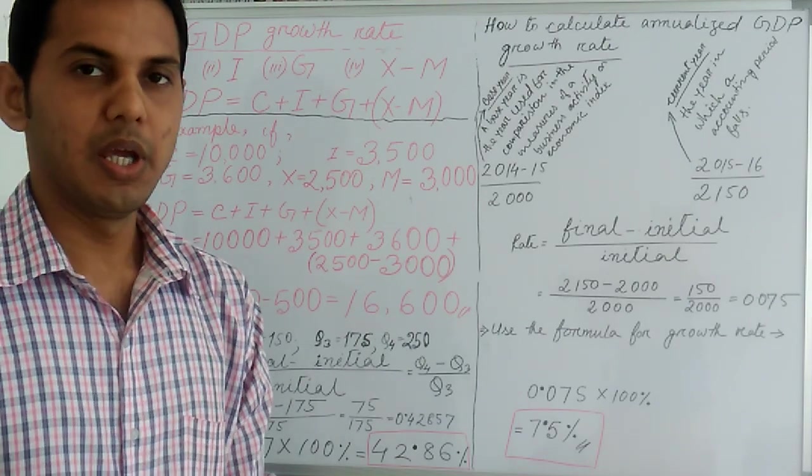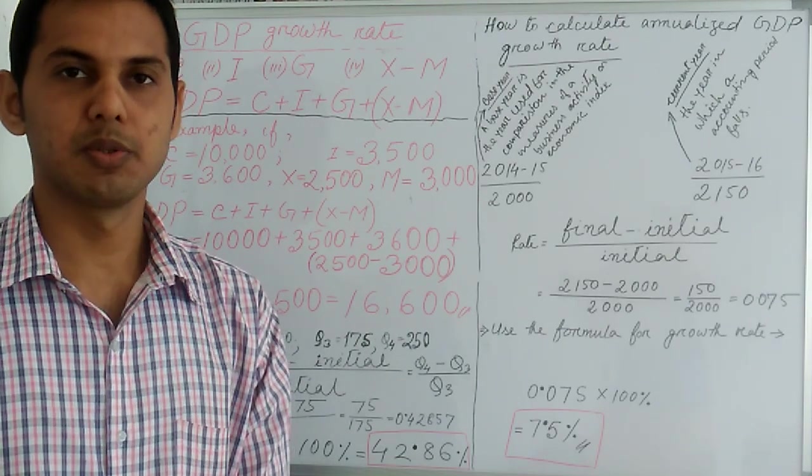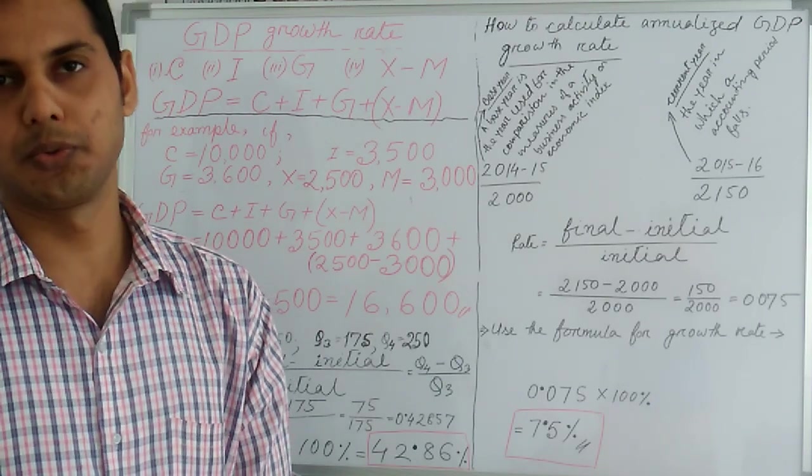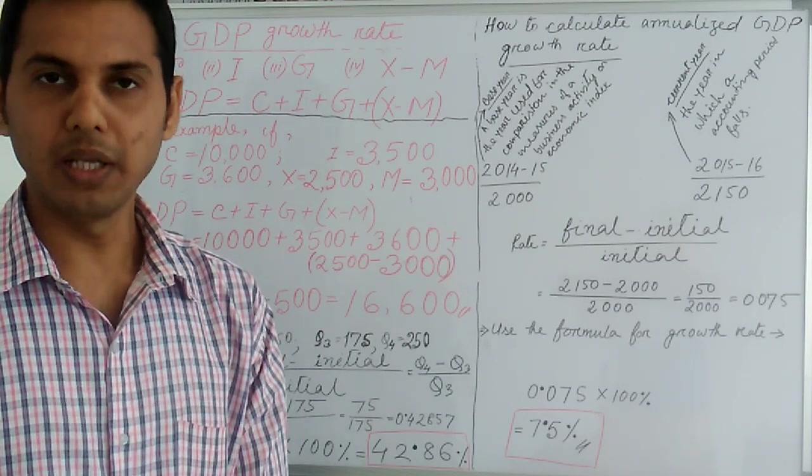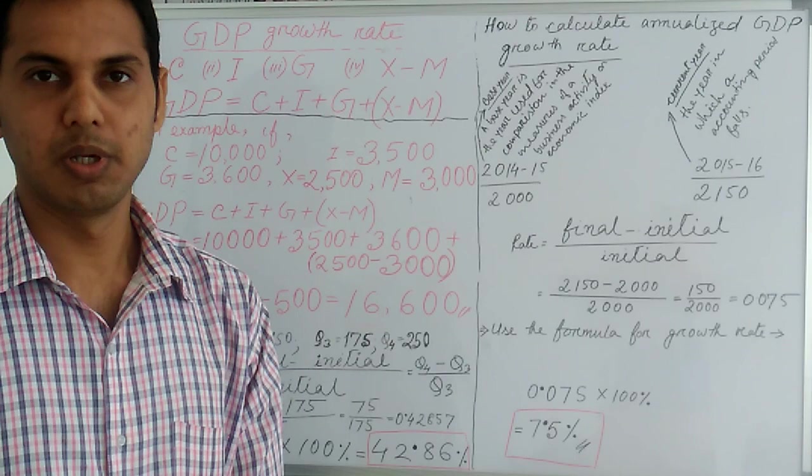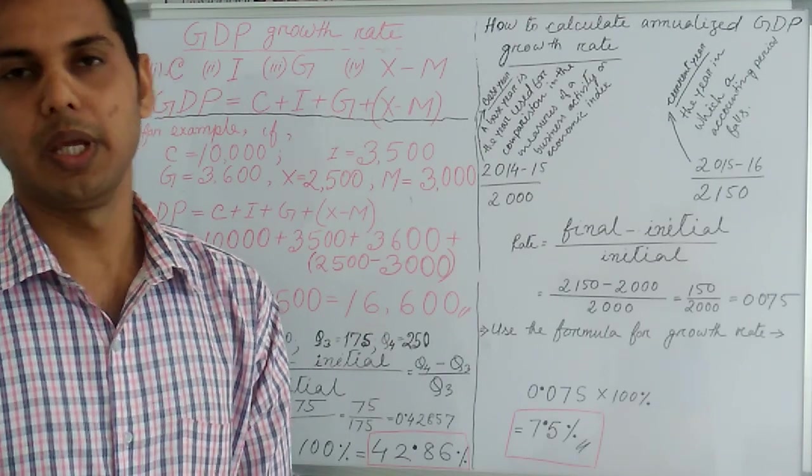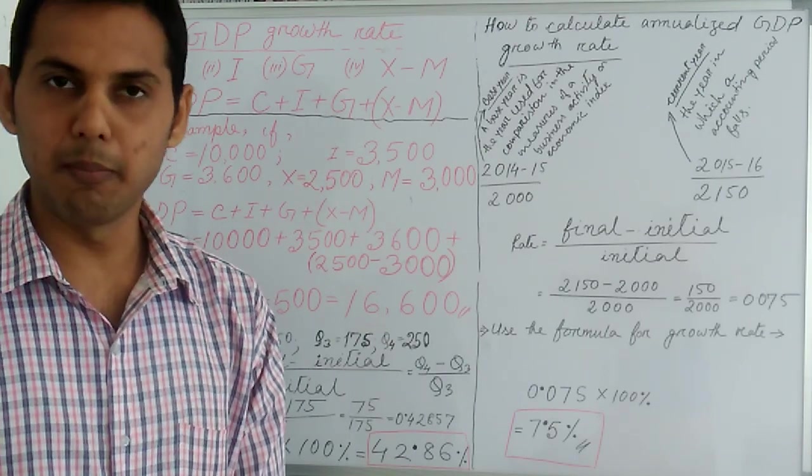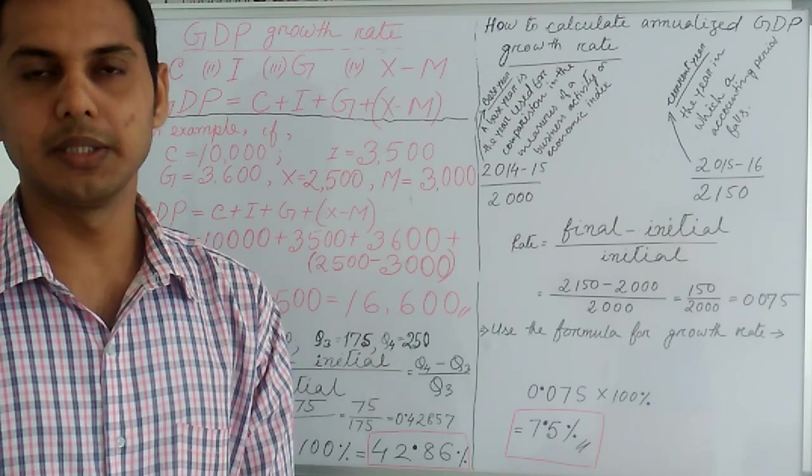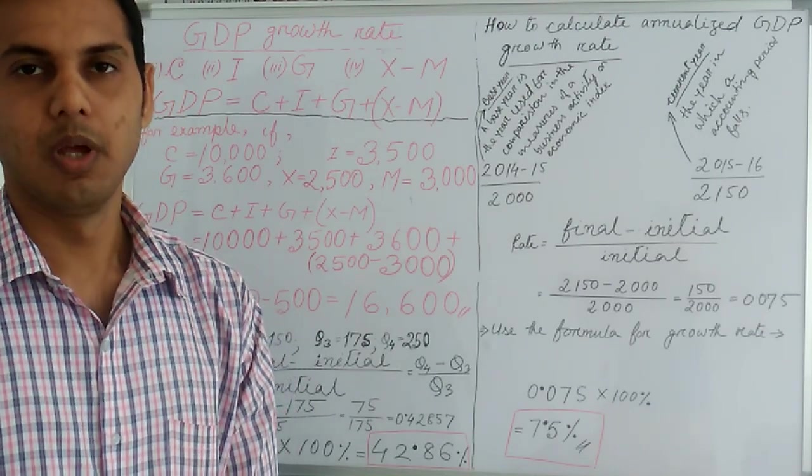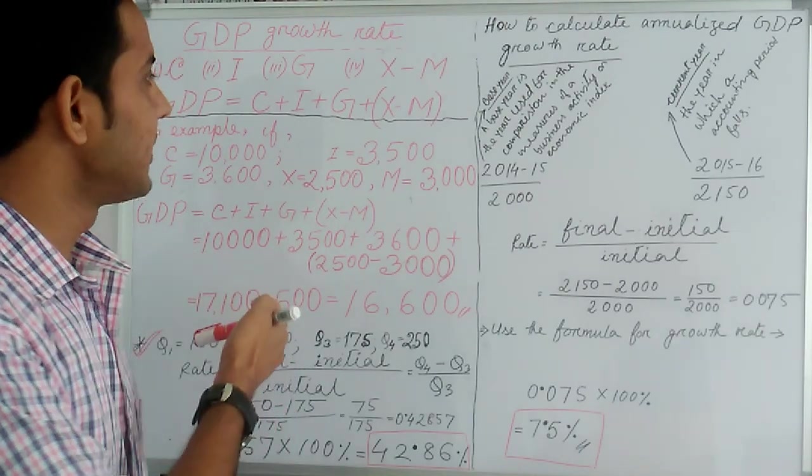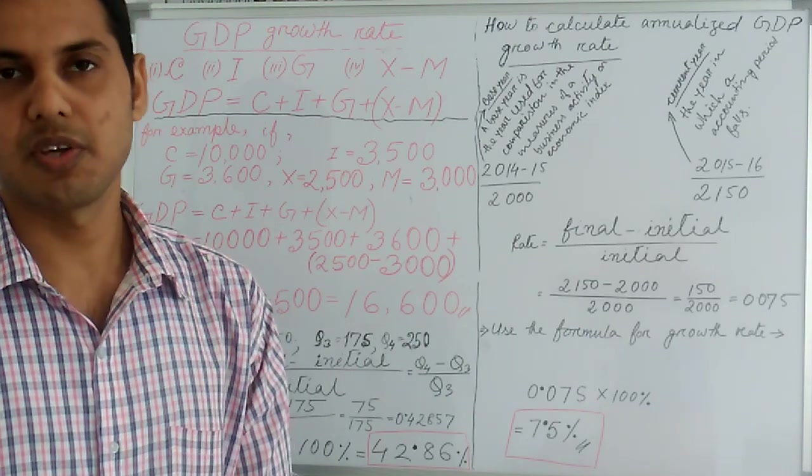Please note there are three methods for measuring GDP growth rate. Number one: Expenditure Approach. Number two: Income Approach. And number three: Value Added Approach. Now you can see this is our expenditure approach.